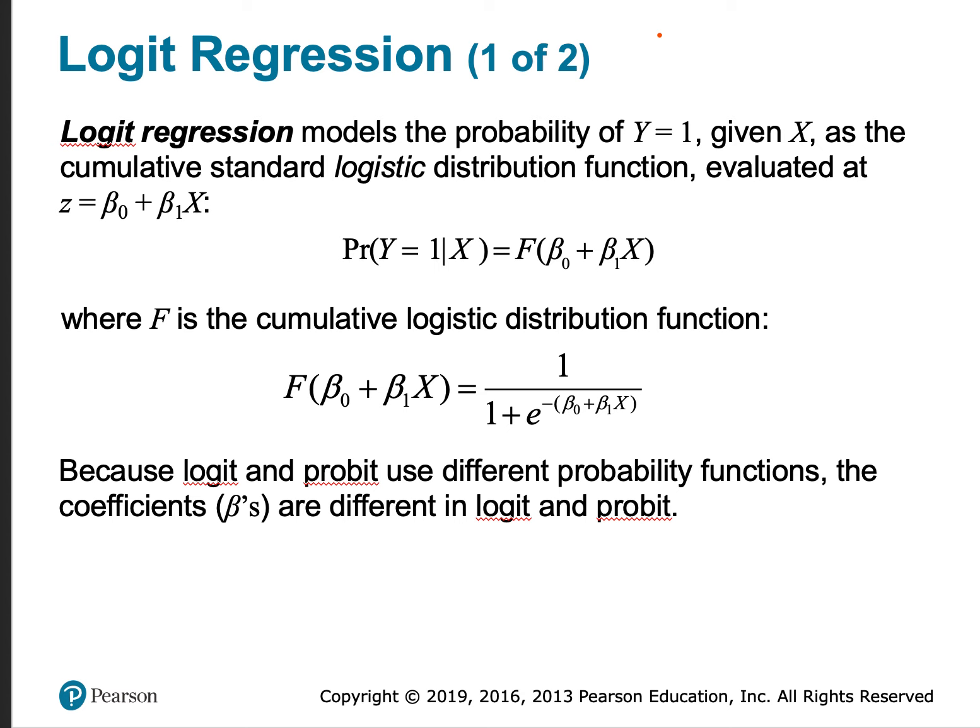In this video we are focusing on logit, and the logit regression, like the other two models we've looked at, models the probability that y equals 1 given x. And in this case, the logit regression uses the cumulative standard logistic distribution function, whereas probit uses the cumulative standard normal distribution function. And in both cases the function is evaluated at z equals beta naught plus beta 1 times x.